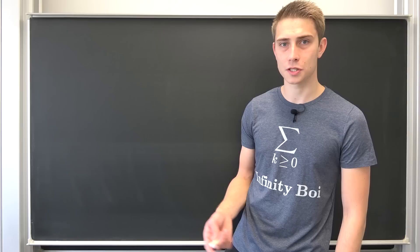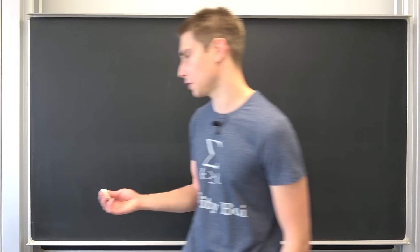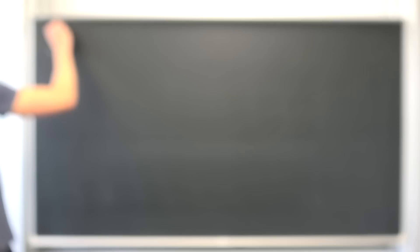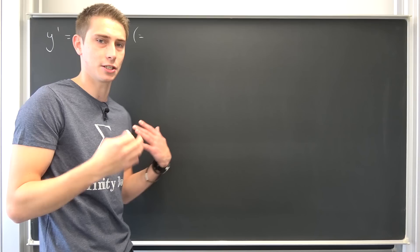So, Euler's method — what is it basically? At first I would like to take a look at a first degree linear differential equation. Let's say y prime is equal to some function f of x comma y — it could be, for example, x times y. It's a really easy differential equation.